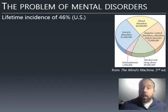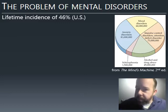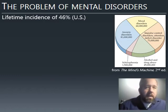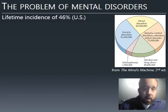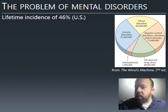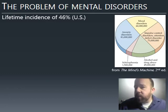Psychological disorders are surprisingly common. In the United States, a person has about a 46% chance of having a psychological disorder over the course of their lifetime. This pie chart indicates how common psychological disorders are — things like anxiety disorders, mood disorders, attention deficit disorders, schizophrenia, and substance abuse. All of them put together, we're talking about tens of millions of people just in the U.S. So it's a big problem.